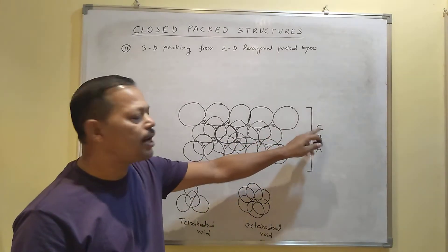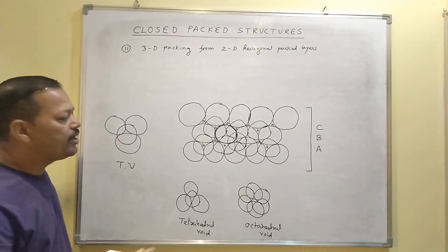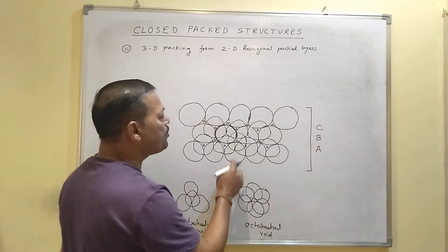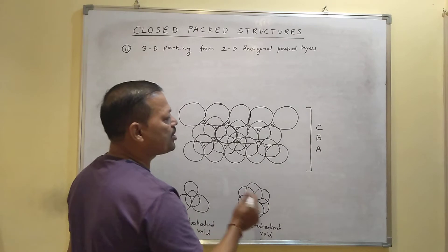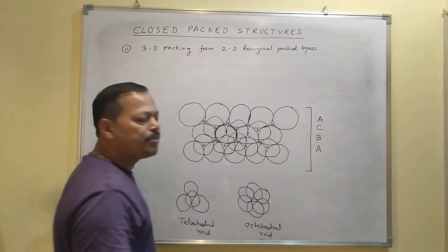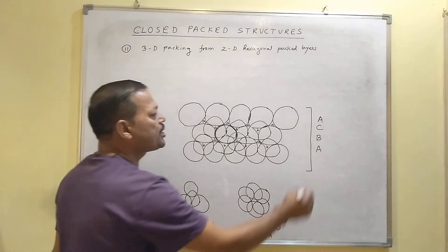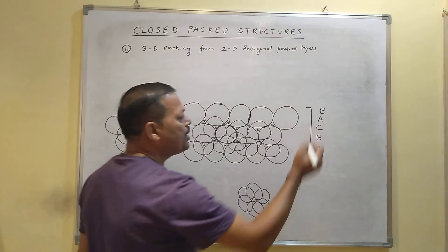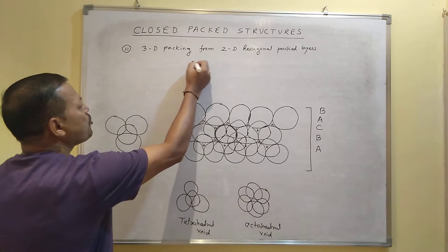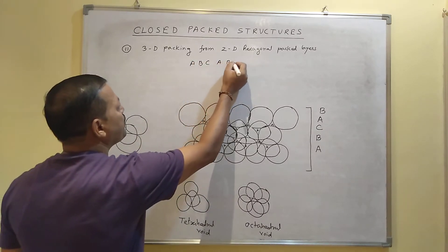Since the third layer position is different from A and B, the third layer is named C layer. Interestingly, when you place the fourth layer, it will be similar to the first layer, so it is again named A. Similarly, the fifth layer will be similar to the second layer, B. That's why this type of arrangement is called ABCABC type packing.